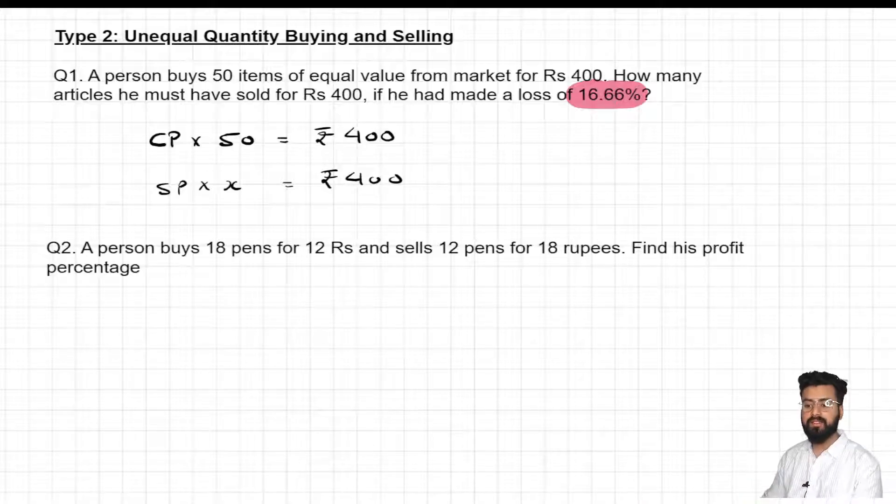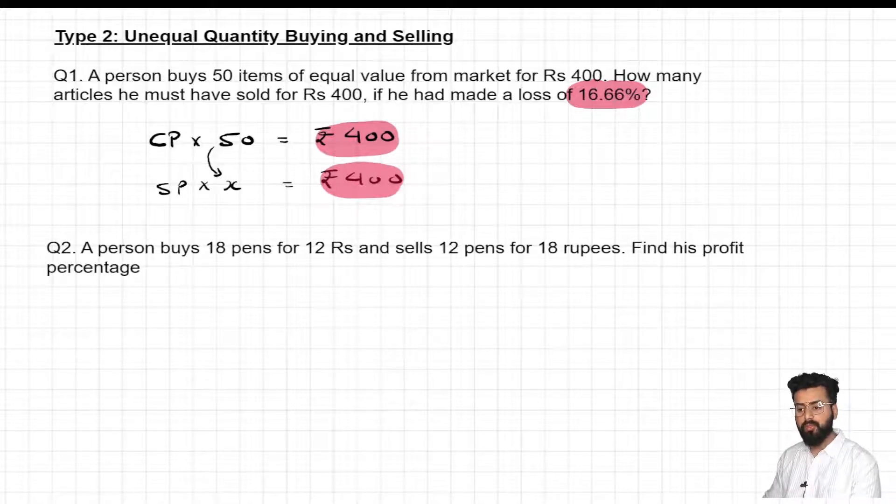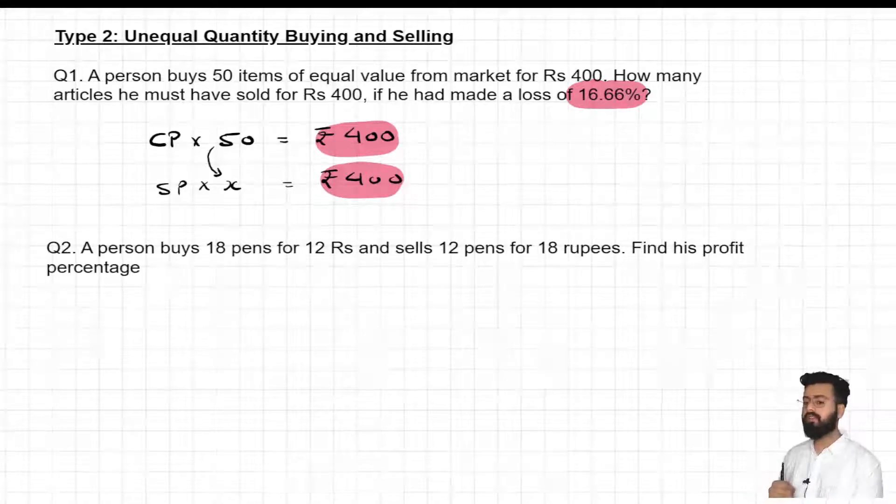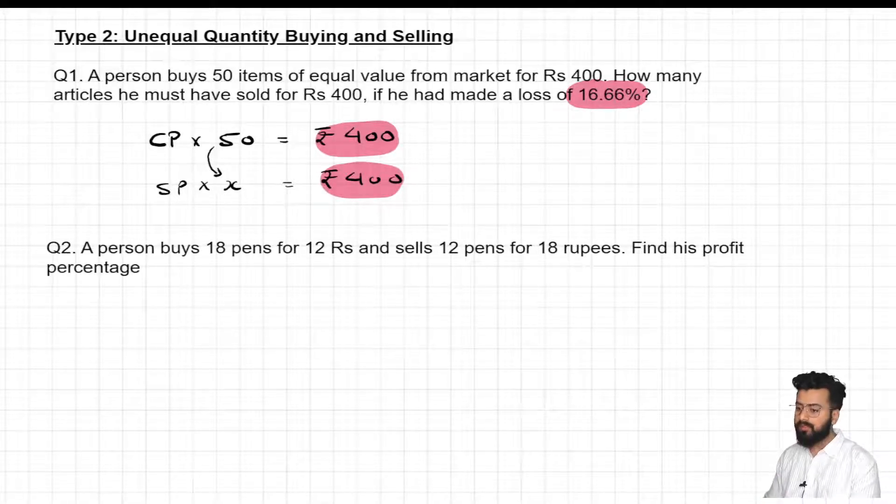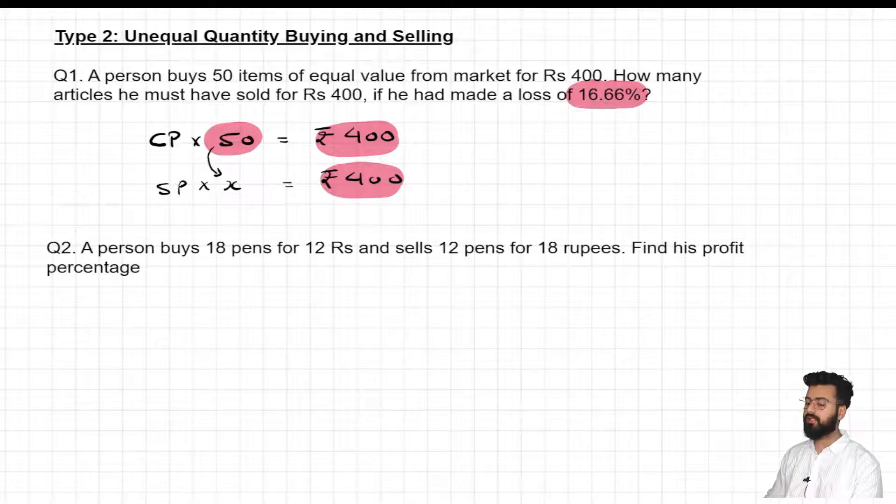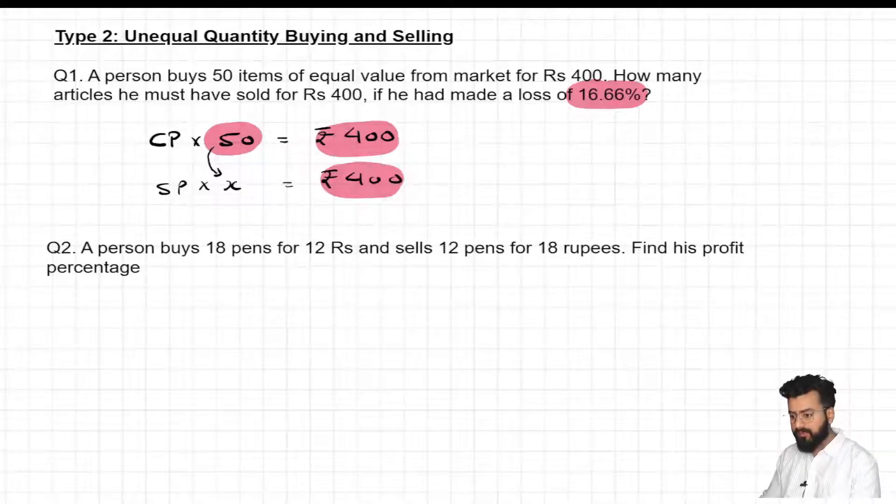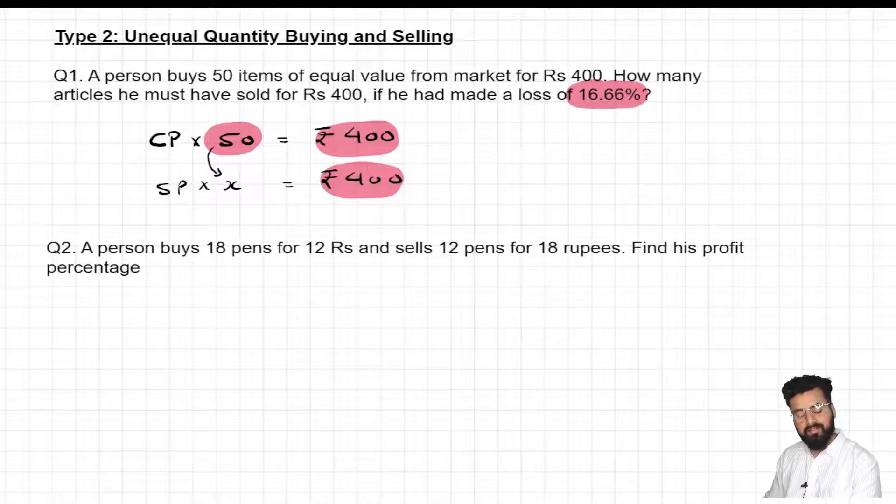Now what this question is saying? Cost price of 50 items is Rs 400. How many articles he must have sold for Rs 400 such that he had made a loss of 16.66%? Okay, this is common sensical. Agar usko loss hua hai 16.66% ka, uska matlab jo number of articles, jo x ka value hai, it must be less than 50. Yes and no. Kyunki 400 rupees ka usne expenditure kiya. Aur jab baat revenue ki thi, toh revenue bhi utna hi kiya. Toh woh apna revenue increase nahi kar raha hai. Woh kya kar raha hai? Woh apne number of articles ko kam ya zyada kar raha hai. Agar usne number of articles 50 se kam beche hote, toh usko profit hua hota. Lekin kyunki question mein given hai ki use loss hua hai, toh one thing is clear, ki usne yahan pe number of articles 50 se zyada hi beche honge. So this is the first thing which I want you to anticipate, ki x ka value 50 se bada hoga.